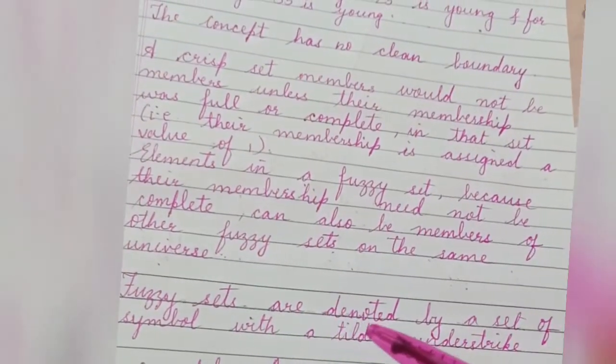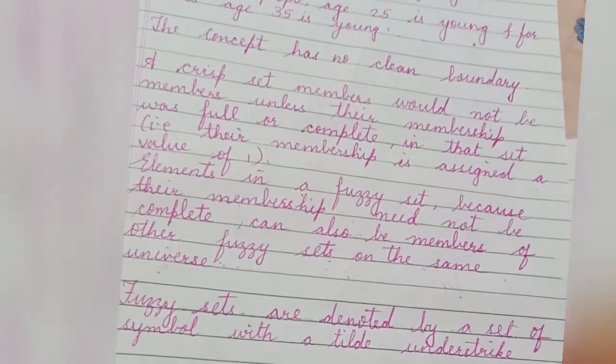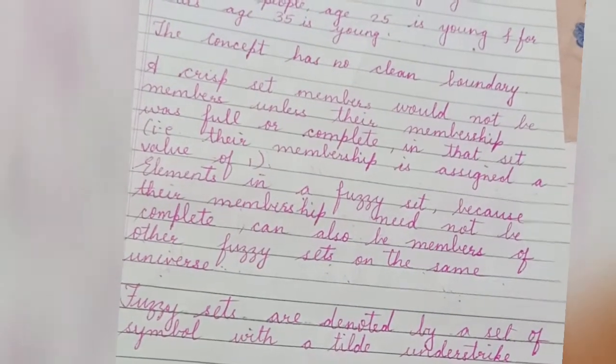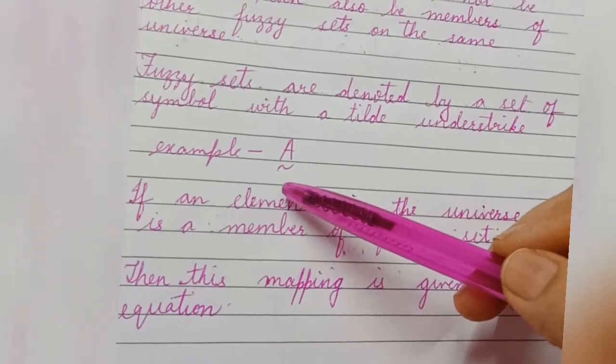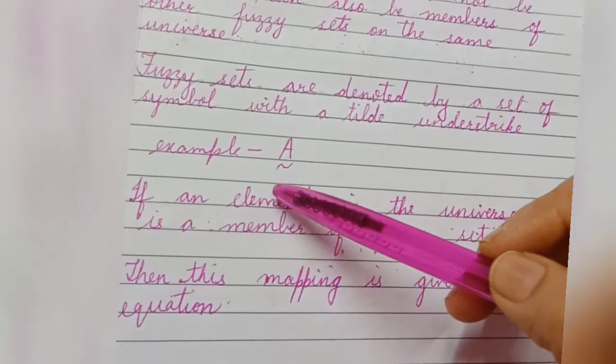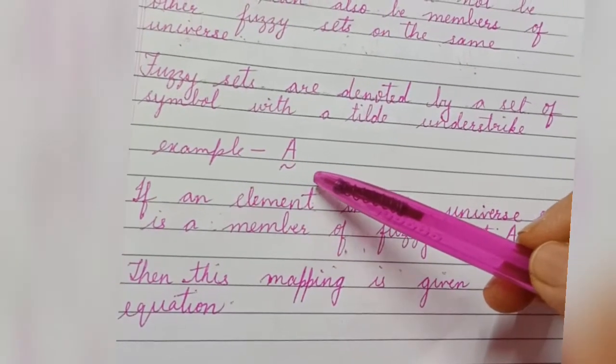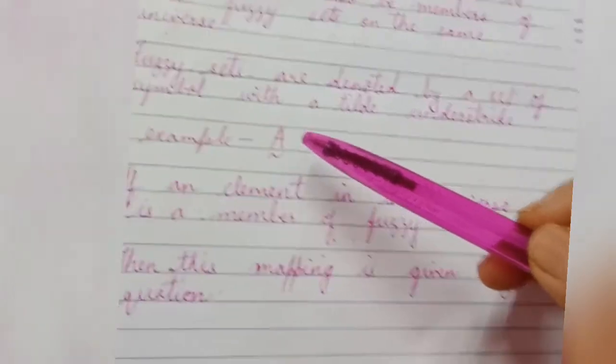Fuzzy sets are denoted by a set of symbols. Here is the example of fuzzy set. Here A is a fuzzy set with a tilde understrike. This is denoted as fuzzy set A.